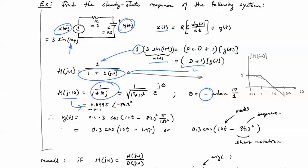The result is that h of j10 is equal to approximately 0.1 magnitude with an angle of minus 84.3 degrees. That gives us a response y of t that is equal to 0.3 times cosine of 10t with the phase shift of minus 84.3 degrees. The signal is attenuated and it is lagging.